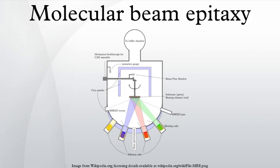In the example of gallium and arsenic, single-crystal gallium arsenide is formed. The term beam means that evaporated atoms do not interact with each other or vacuum chamber gases until they reach the wafer, due to the long mean-free paths of the atoms.